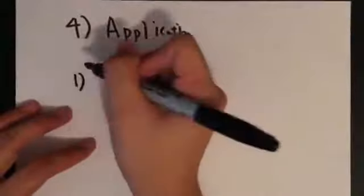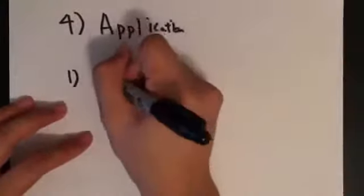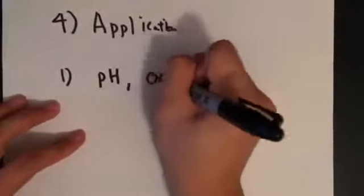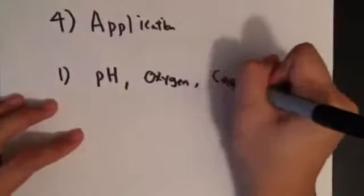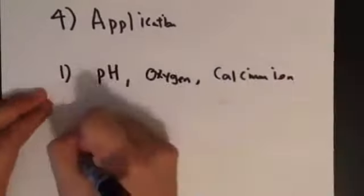Now let's discuss some applications of the FLIM technique. First, as many environmental factors affect fluorescence lifetime, FLIM can be used to detect those factors. And these factors include pH, oxygen, and calcium ion concentration.